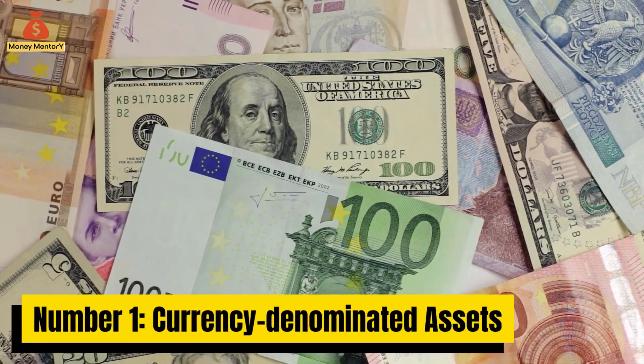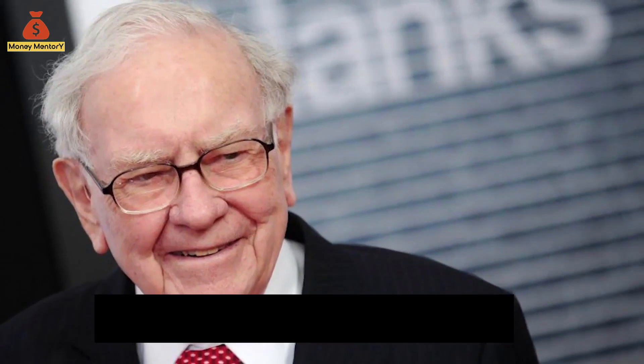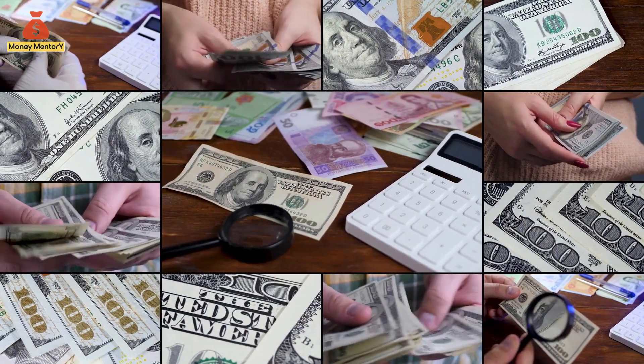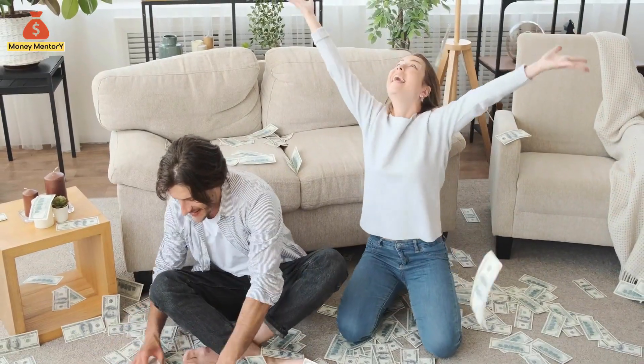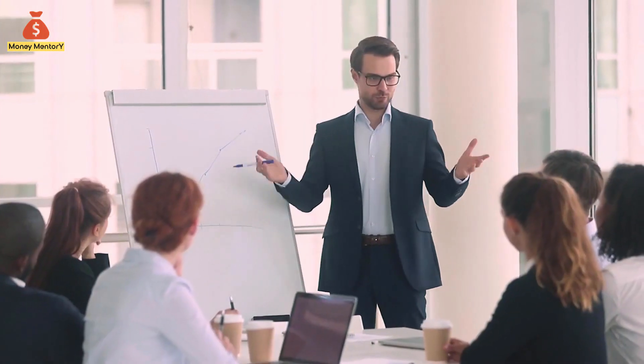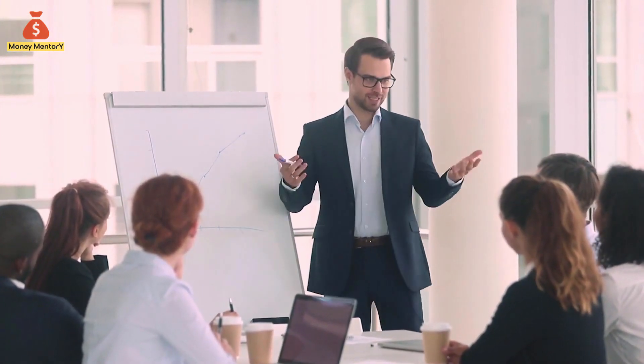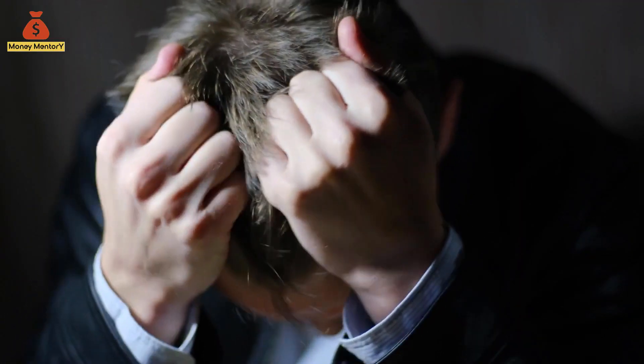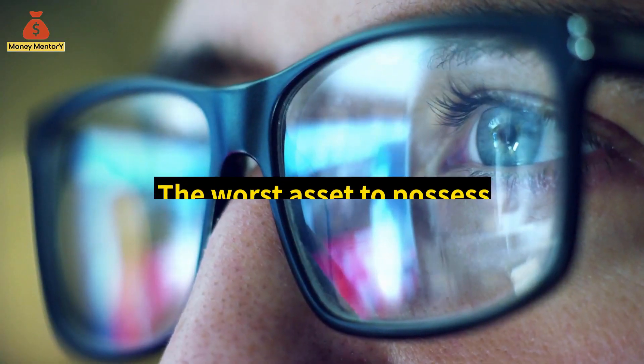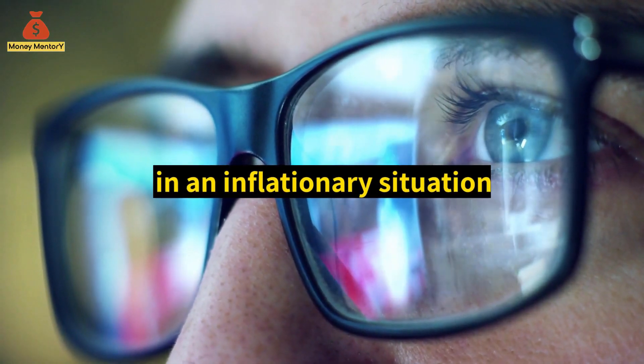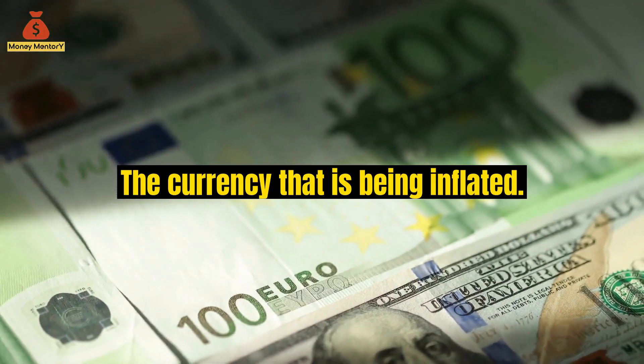Number 1: Currency Denominated Assets. Warren Buffett says, if we dropped $1 million of cash into every household in the United States today, everybody would feel very good, except the people that invested in things that were denominated in dollars. When it comes to owning investments during times of inflation, this is the worst investment to own. The worst asset to possess in an inflationary situation is, of course, the currency that is being inflated.